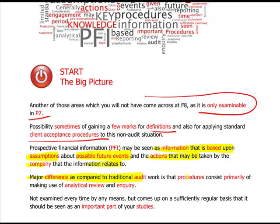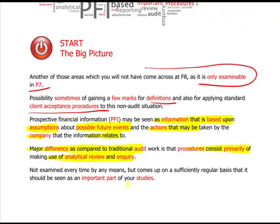The traditional audit work difference is that procedures consist primarily of analytical review and inquiry. You can't retest controls, you can't really do substantive testing of transactions because they're yet to happen. You just have to look at the assumptions that have been given to you and cross-check one piece of information against another - that's analytical review.